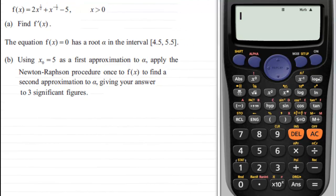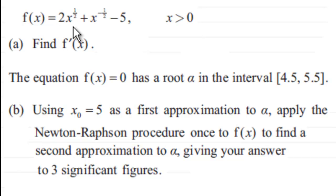Hi. Now what we've got here is an example based around Newton-Raphson's procedure. We're given that f(x) equals 2x to the power half plus x to the power minus a half minus five where x is greater than zero, and we're asked to find f'(x).